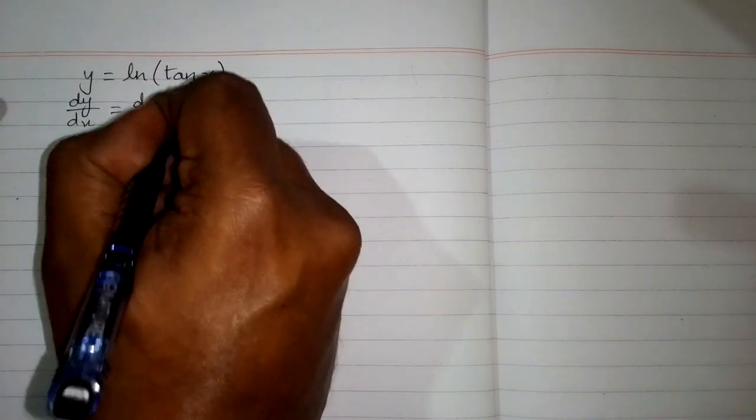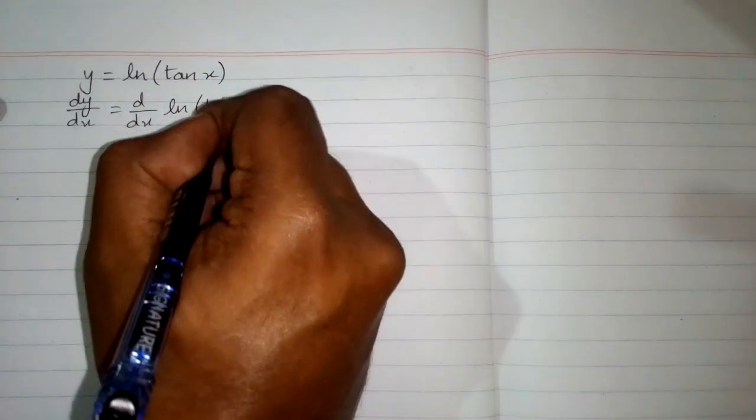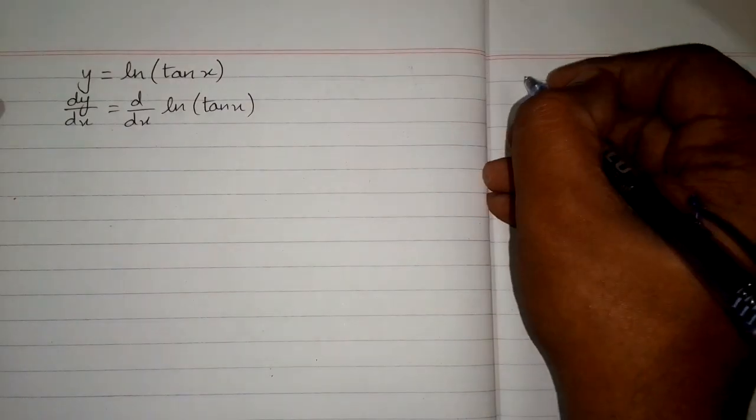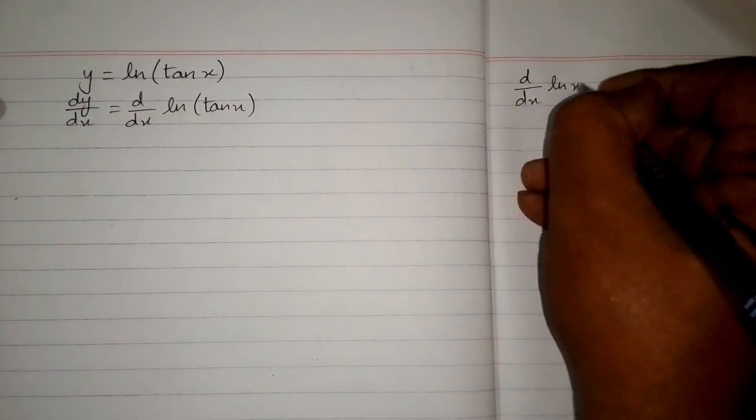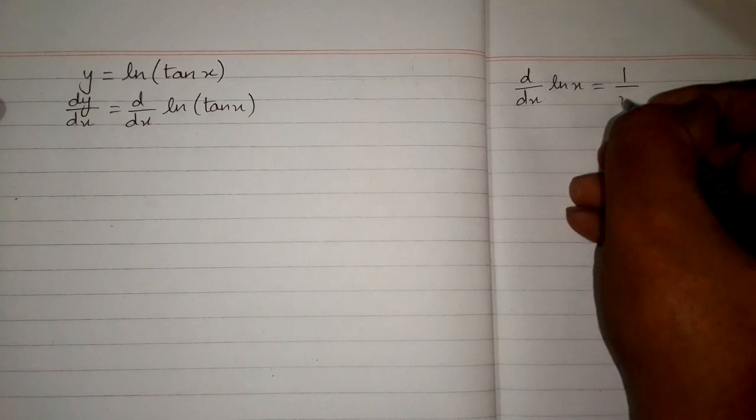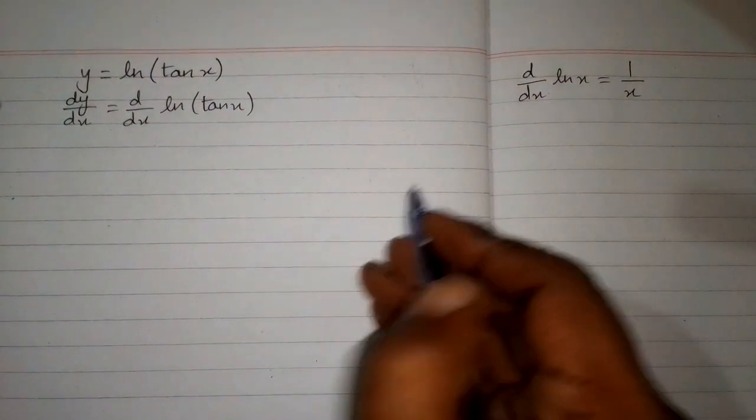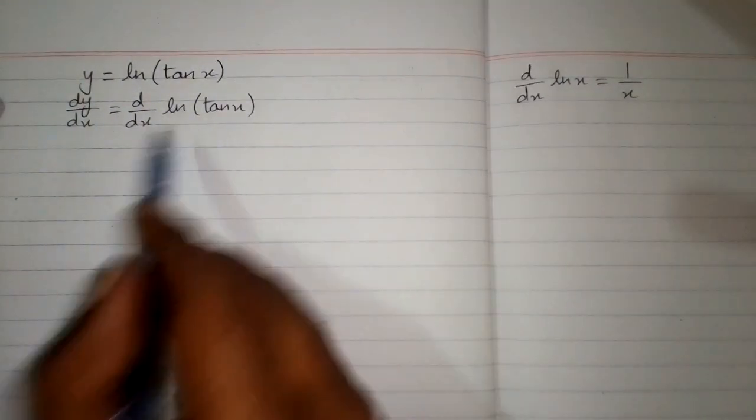So we have dy by dx is equal to d by dx of ln of tangent of x. We know that the derivative of ln of x is equal to 1 upon x, so we can apply this formula over here.